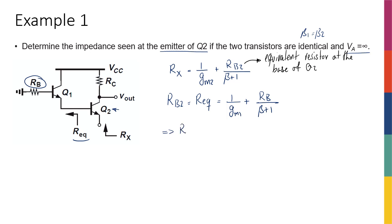So it's going to be Rx equals 1 over Gm2 plus 1 over Gm1 plus Rb over beta plus 1. So this is going to be the resistance that I see.